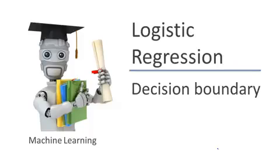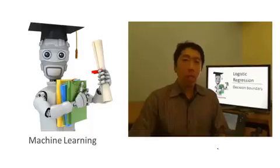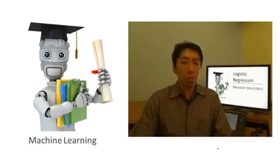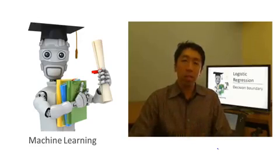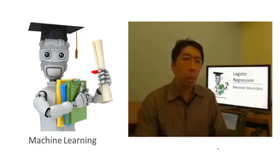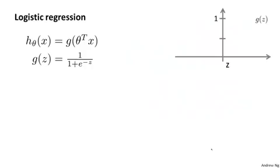In the last video, we talked about the hypothesis representation for logistic regression. What I'd like to do now is tell you about something called the decision boundary, and this will give us a better sense of what the logistic regression's hypothesis function is computing. To recap, we wrote out last time that the hypothesis is represented as h of x equals g of theta transpose x, where g is the sigmoid function, which slowly increases from 0 to 1, asymptoting at 1.